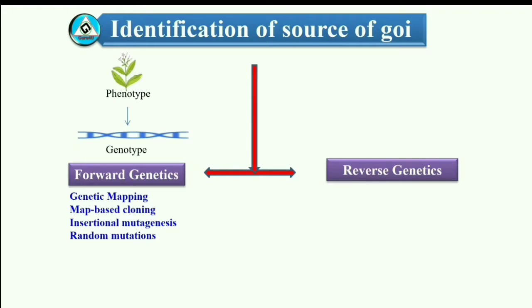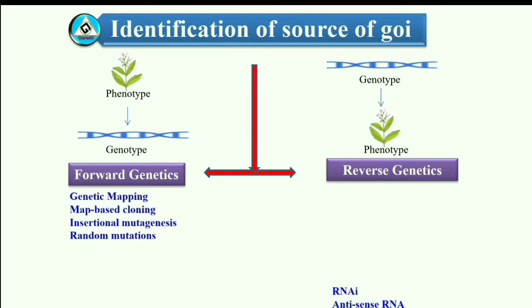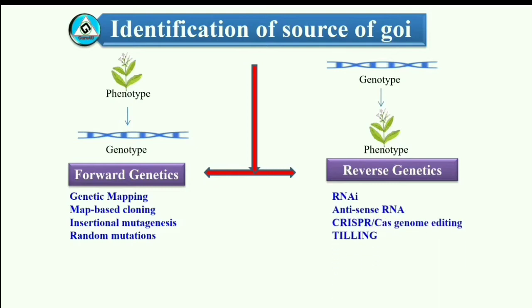Reverse genetics is used to analyze the phenotype of an organism following the disruption of a known gene. It may involve RNAi, antisense RNA, CRISPR, Cas9 genome editing, TILLING, etc.